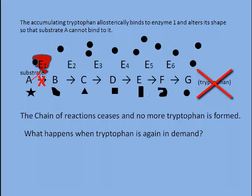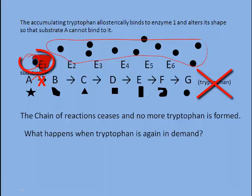What happens when tryptophan is again in demand? Well, this tryptophan that's lingering about here and occupying this allosteric site on the enzyme will actually be used up to make the desired protein. And even this one will be used to make the protein. As a result, the pathway will become active again.